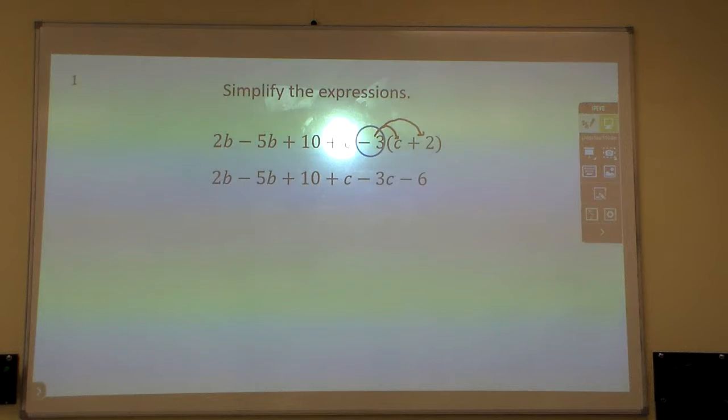And now all we're going to do is just combine the terms that are like. Notice I colored them up there. The 2b and the minus 5b are b's. It's kind of like adding apples and oranges. You can only add apples to get apples, more apples.